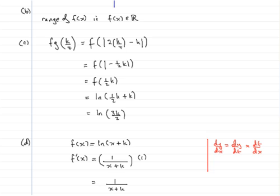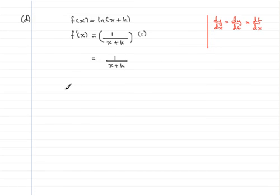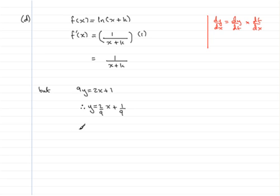We're told that the tangent to C at x coordinate 3 is parallel to the line 9y equals 2x plus 1. If I rearrange this by dividing both sides by 9, I get y equals 2 ninths x plus 1 ninth. From this I can see that the gradient is 2 ninths.